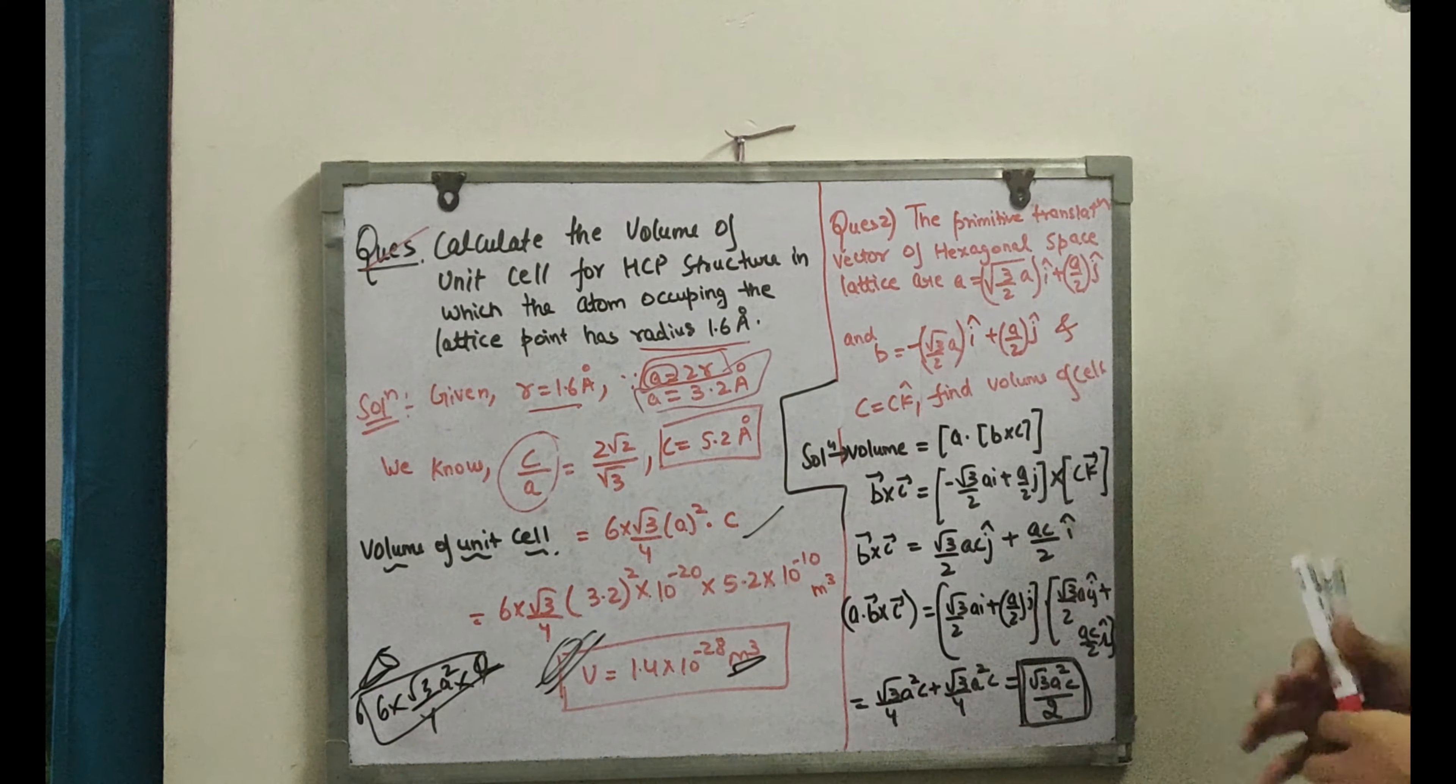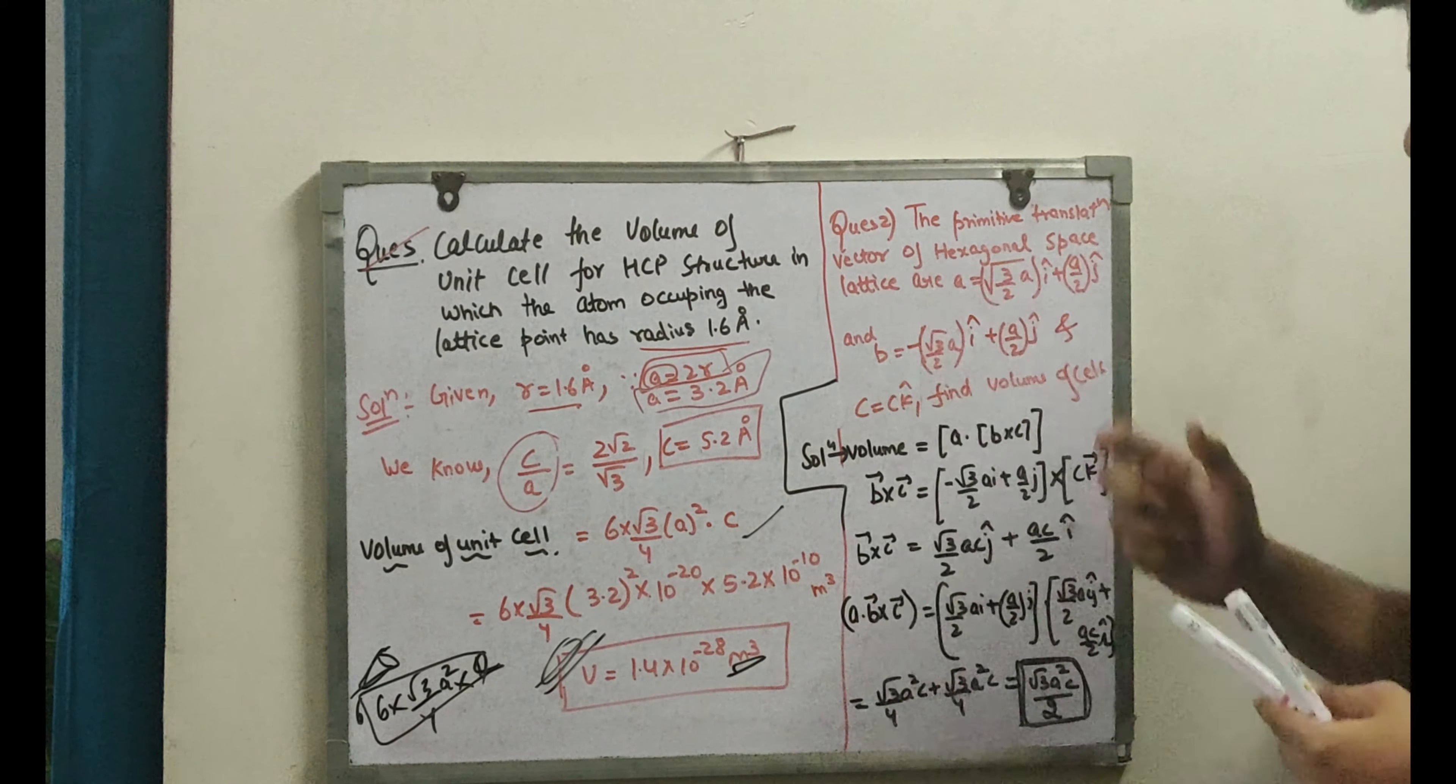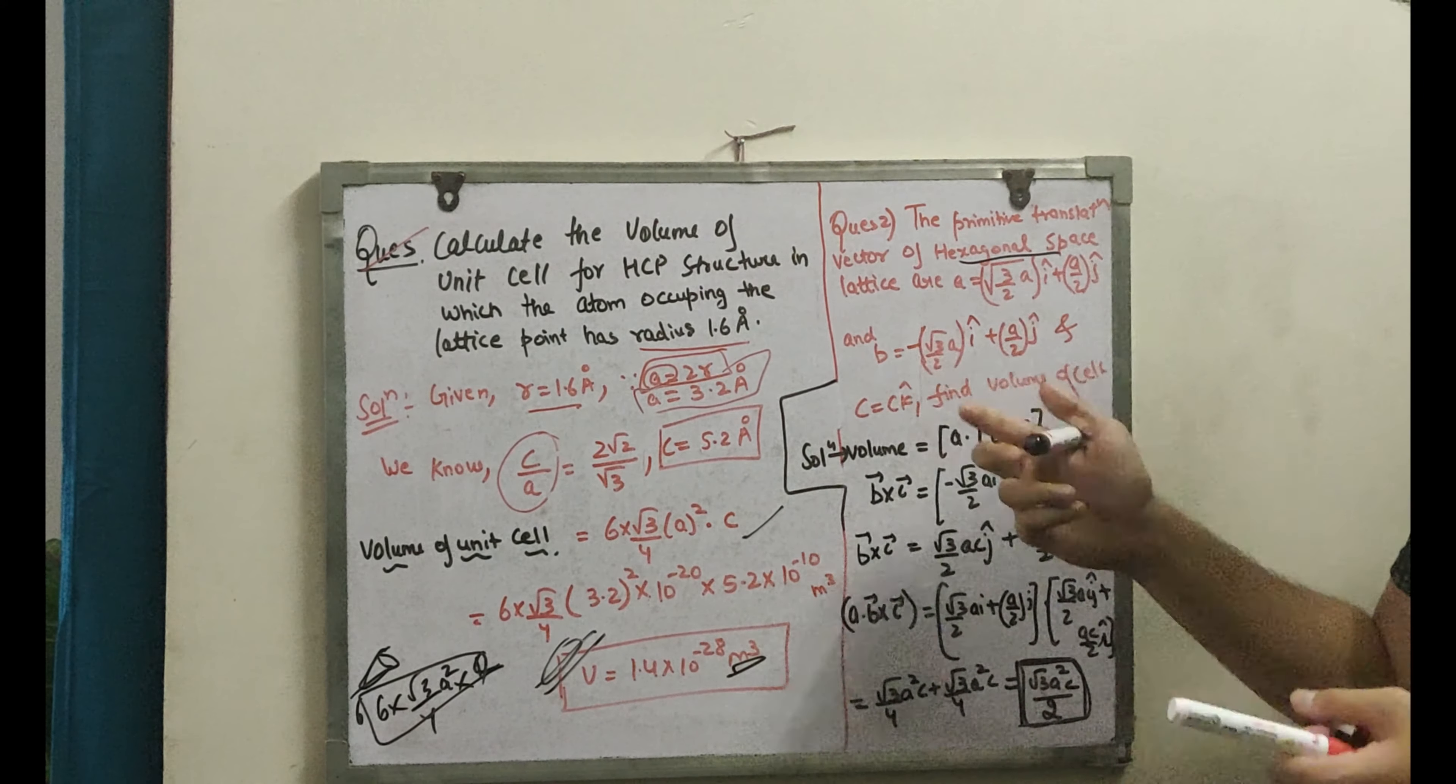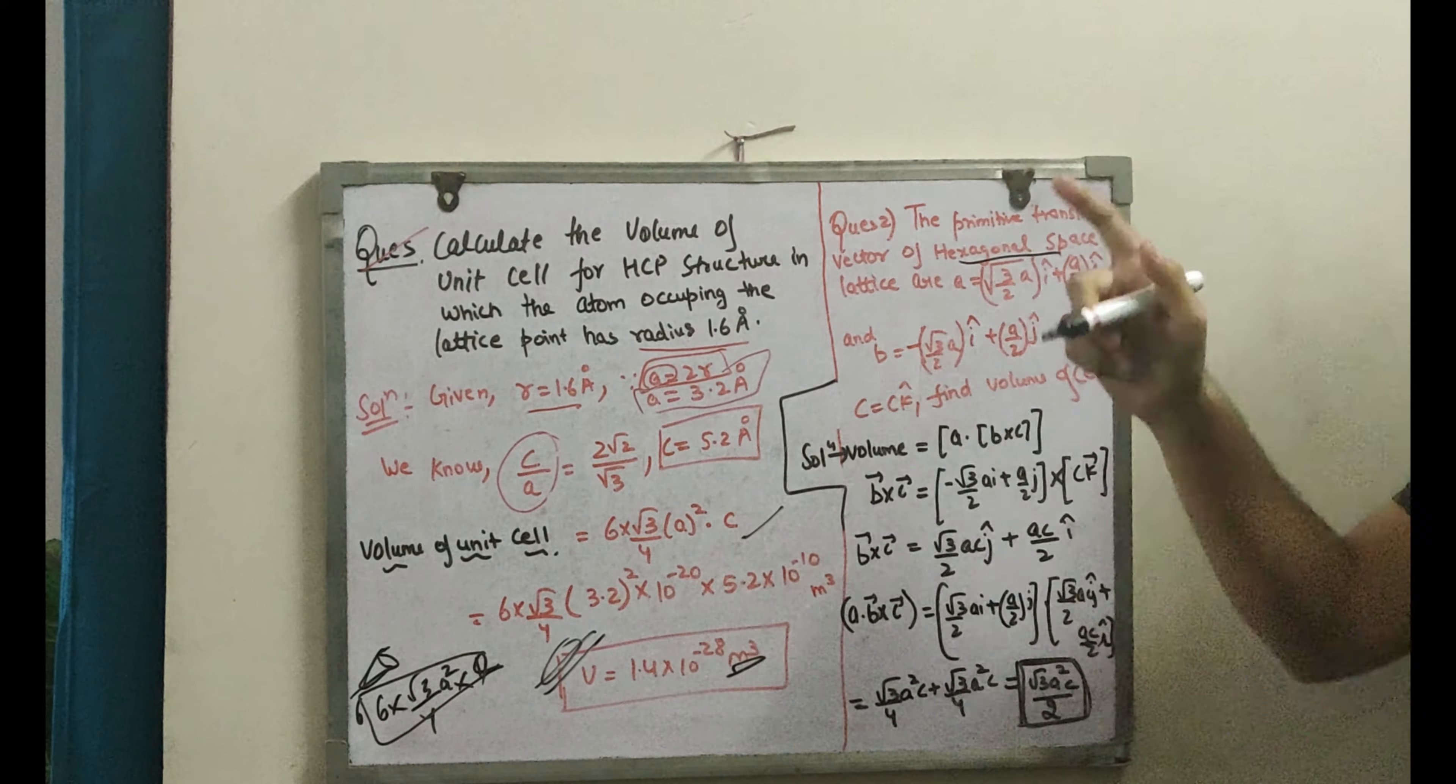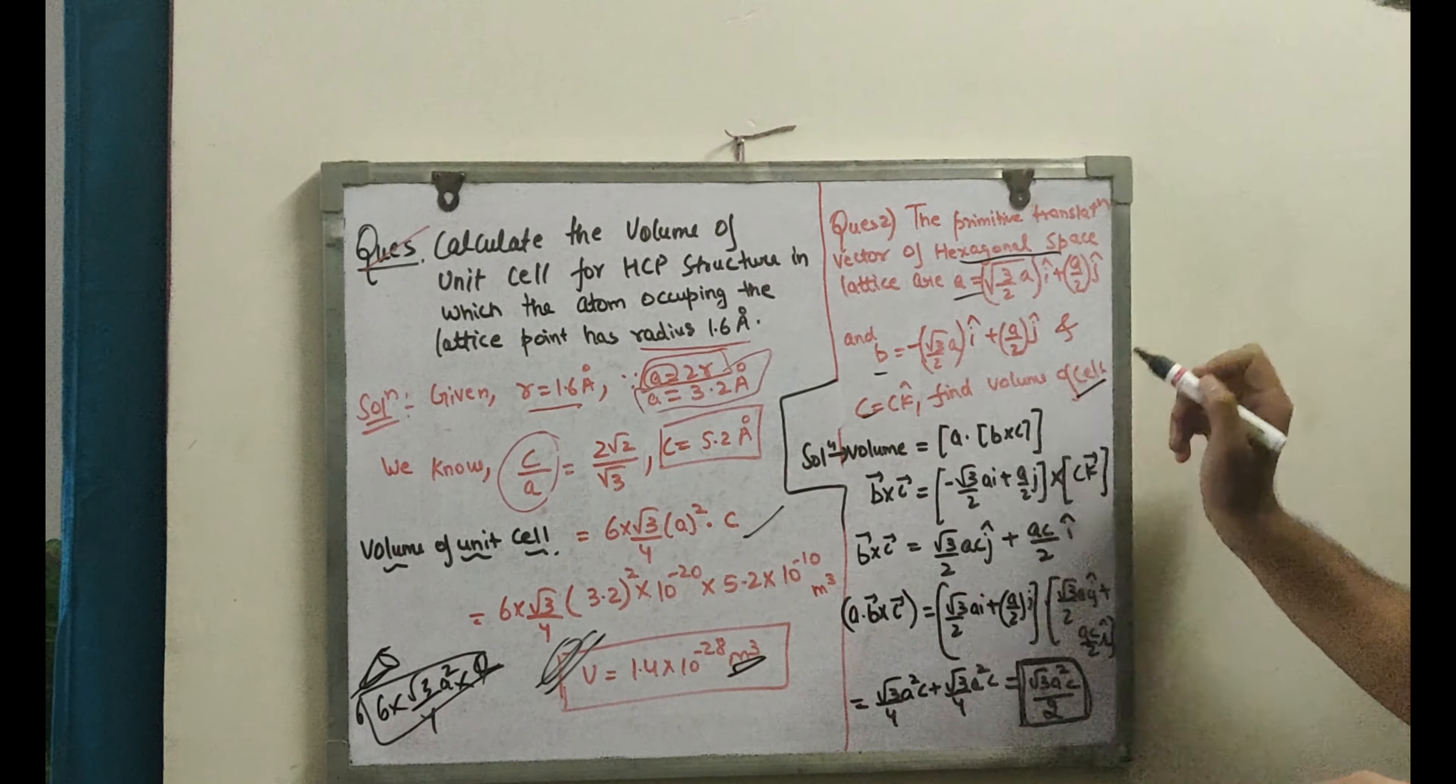Now we have another question. These vectors are defined as the primitive translation vectors of hexagonal close packing. A vector is given, B vector is given, C vector is given. That is, primitive translation vectors - fundamental translation vectors that are A, B and C. Then find the volume of the cell. We need to find volume of hexagonal close packing.